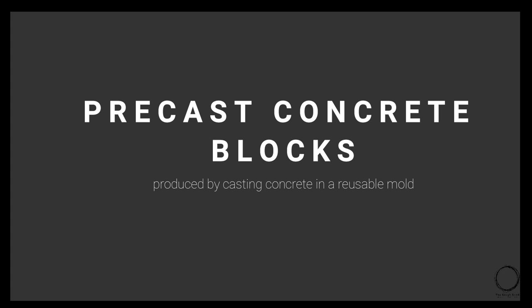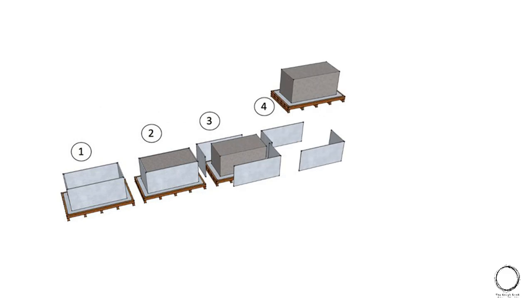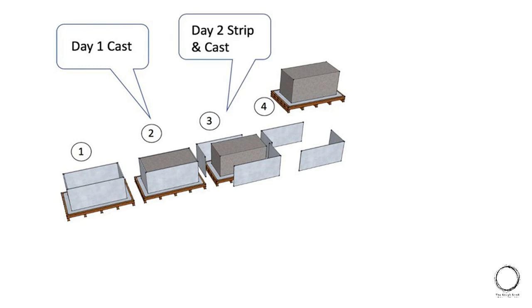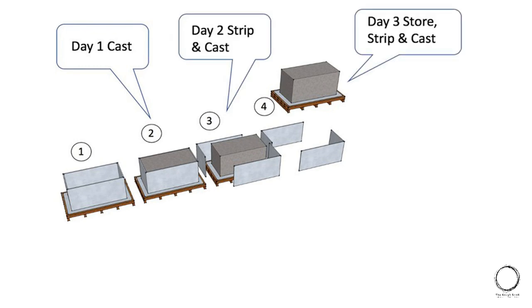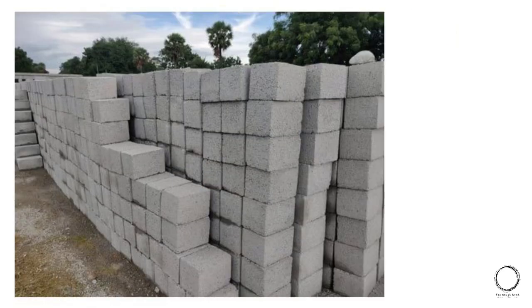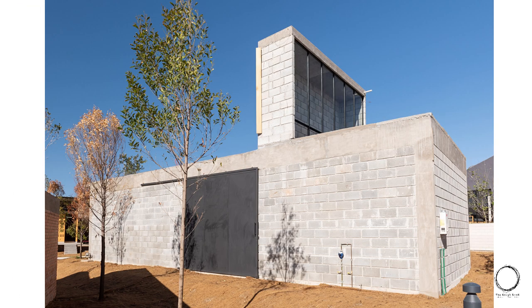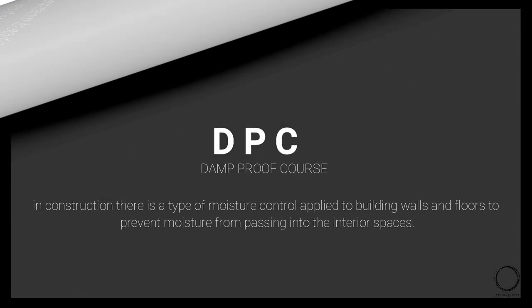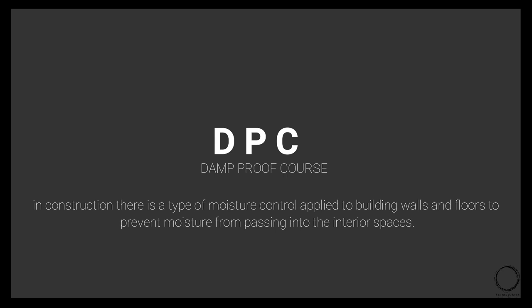Another popular type of masonry these days is precast concrete blocks, produced by casting concrete in a reusable mold. The concrete mixture is added to molds and then stripped after the following days. The end product — precast concrete blocks — is laid in courses just like brick bonds.